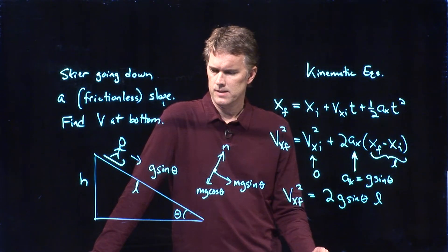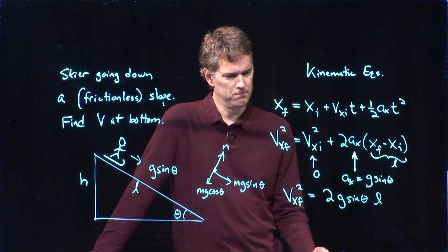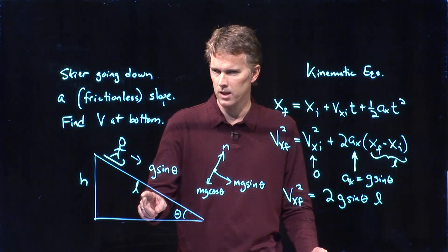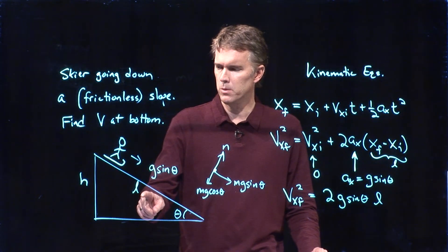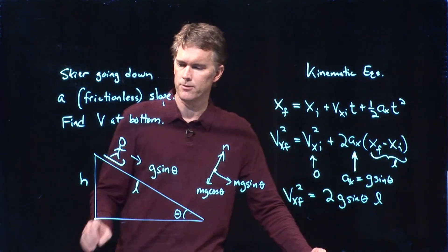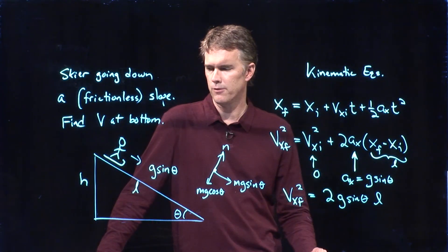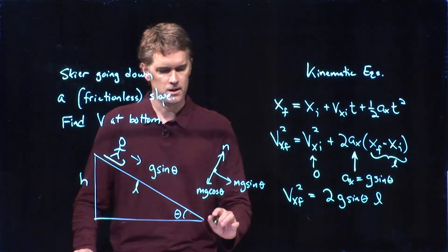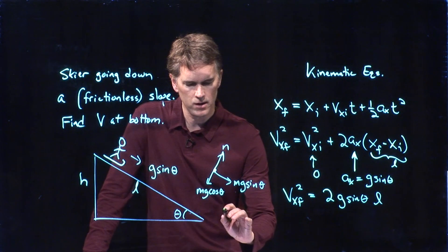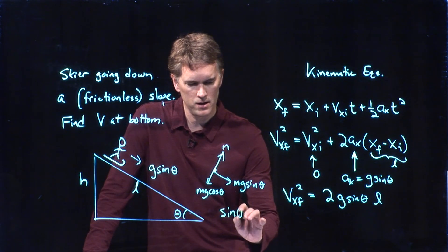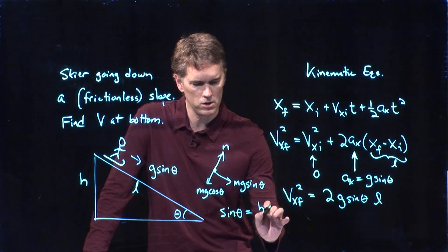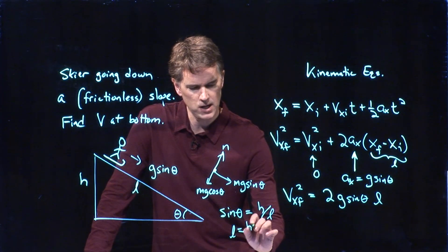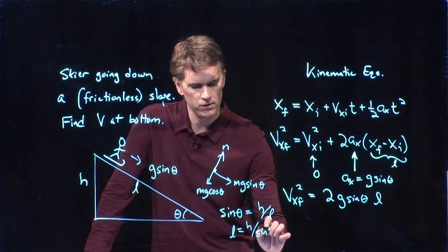Okay. And now we can calculate vx final. We get vx final squared is equal to 2g sine theta all of that times L. Now, all right, that looks pretty good. But we don't know maybe what L is. Maybe we were only given H. But, of course, there is a relationship between H and L. It's that angle theta. And what we can say is sine theta equals H over L. And so I can solve this for L. L is equal to H over sine theta.